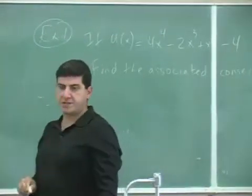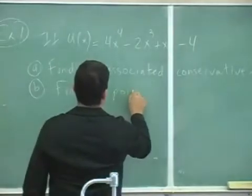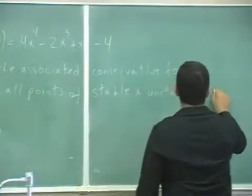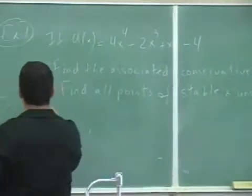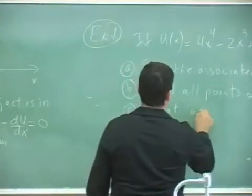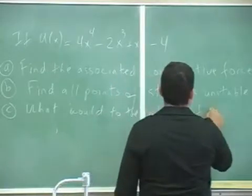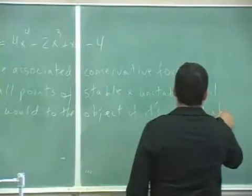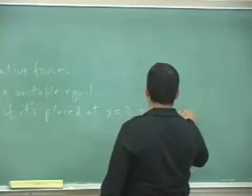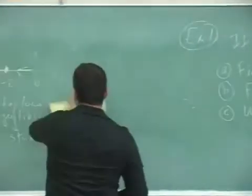And then part b, find all points of stable and unstable equilibrium. And then part c, what would happen to the object if it's placed at x equals 0 and plus or minus 3 meters? Just some arbitrary points.